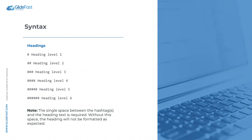Syntax: Markdown was built with the same idea as HTML — it defines what something looks like. Many things in Markdown have an equivalent HTML element. Just like you have h1 through h6 for headings in HTML, in Markdown you write a hashtag, space, then your heading text. The space between the hashtags and the heading text is 100% required — without it, the renderer won't apply the correct heading styles.